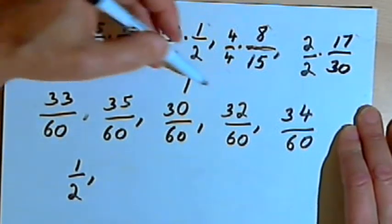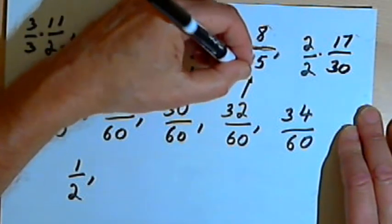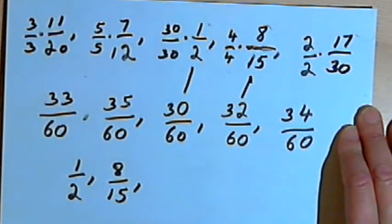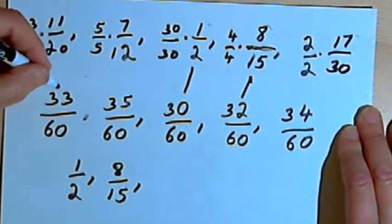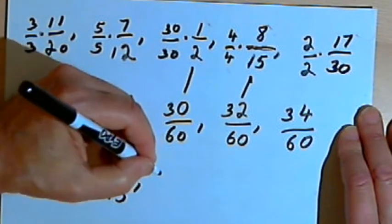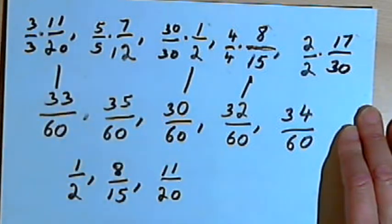After that, I go to 32 over 60. And that was originally the fraction 8 over 15. So that's the second one. Then I go to 33. 33 over 60 was originally 11 over 20. So 11 over 20 is my third fraction.